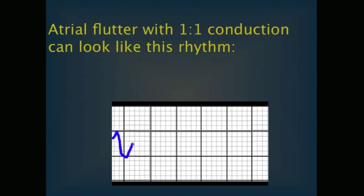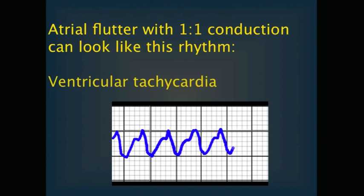Atrial flutter with a 1-to-1 conduction ratio often looks like VTAC. In this scenario, you could consider carotid massage to try and slow the ventricular rate, which might reveal a flutter with a 2-to-1 block at half the rate of the first electrocardiogram.